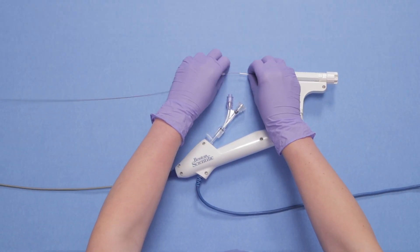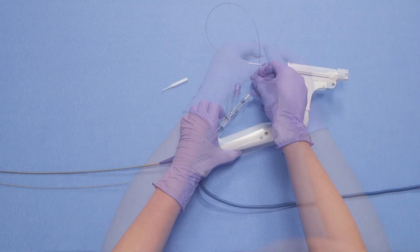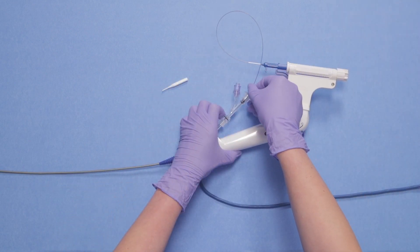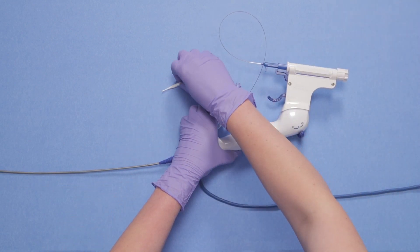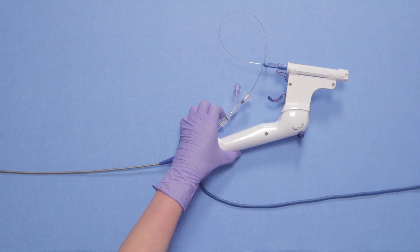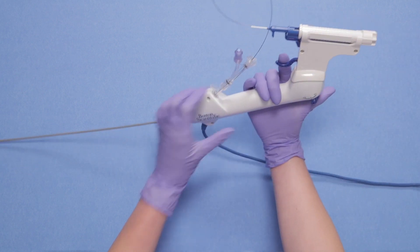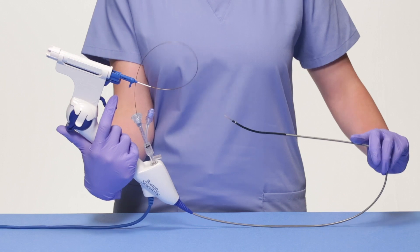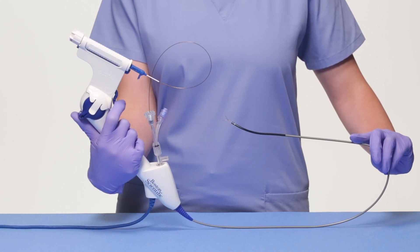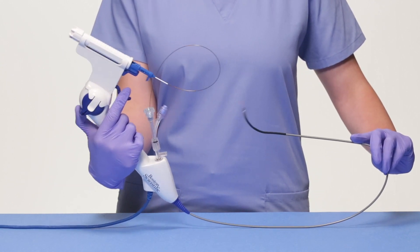Then, feed the basket through your scope adapter. Ensure the adapter is completely open before feeding your device through or use an introducer. Please note that if you are using an adapter other than a TUI Borst style adapter, you must use an introducer to insert the basket into the working channel of the scope.